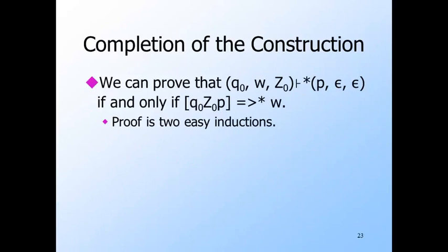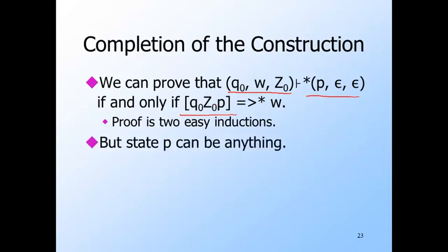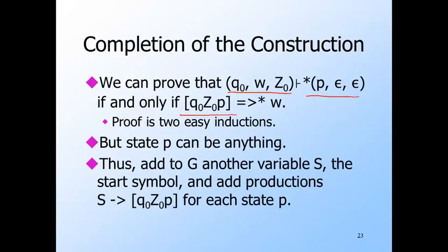With productions constructed in this manner, we can prove that P accepts W by empty stack. That is the ID (q0, W, Z0) goes to (p, epsilon, epsilon), if and only if the variable [q0, Z0, p] derives W. We're not going to give the proof. It is two easy inductions, one for each direction. The only problem is that we don't know state p. But remember, G has another variable S, and that is the start symbol. So we add production S goes to [q0, Z0, p] for every state p. And now we have a grammar that generates exactly the strings that the PDA P accepts.